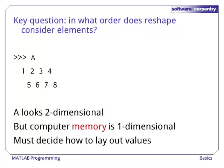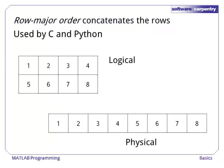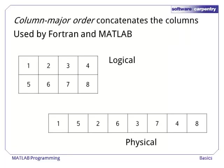To think about two-dimensional matrices, we need to decide on a convention on how to store the matrix in memory. One possibility is row major order, which concatenates the rows. This is the convention used in the C programming language and in Python, since Python is written in C. In contrast, column major order concatenates the columns. The Fortran language uses column major ordering, and since MATLAB uses many matrix manipulation programs from Fortran, MATLAB uses column major ordering.